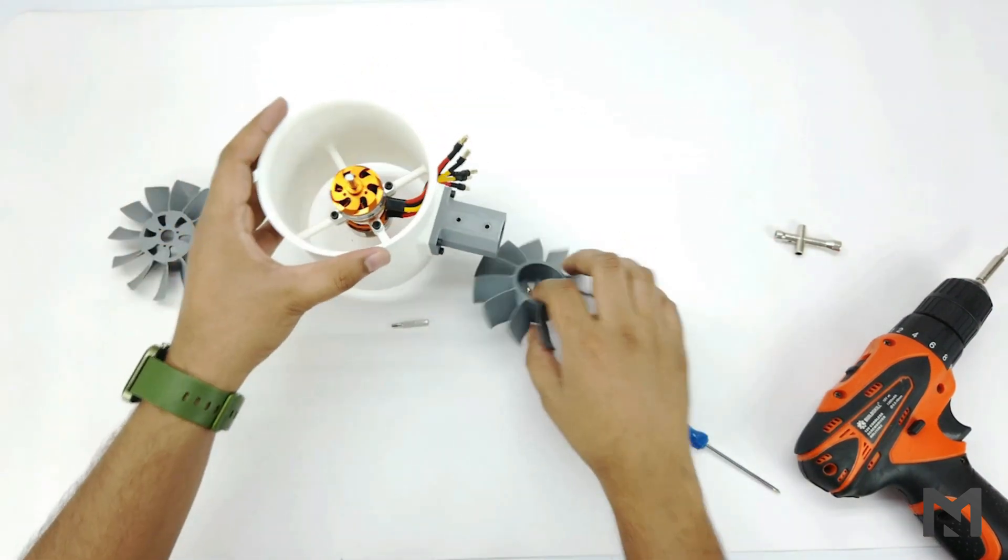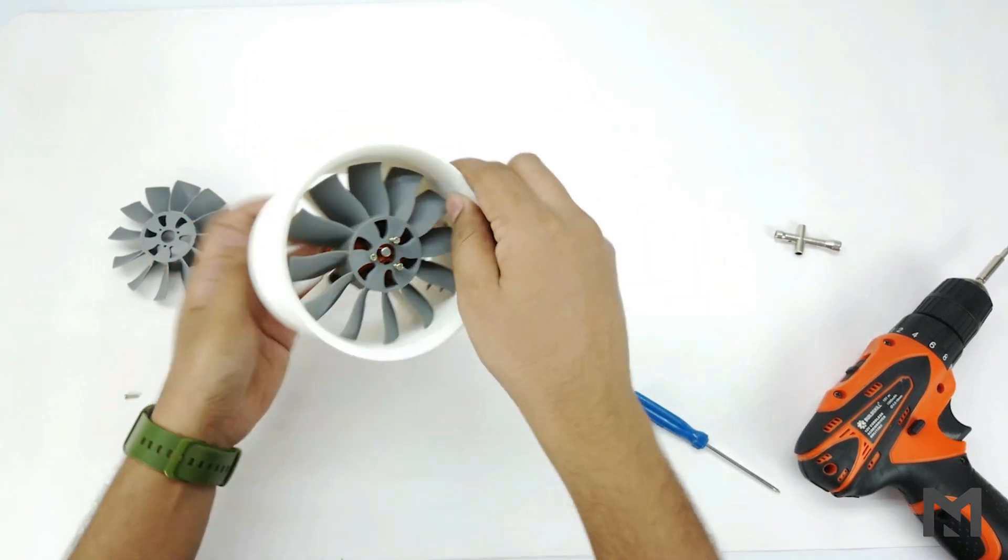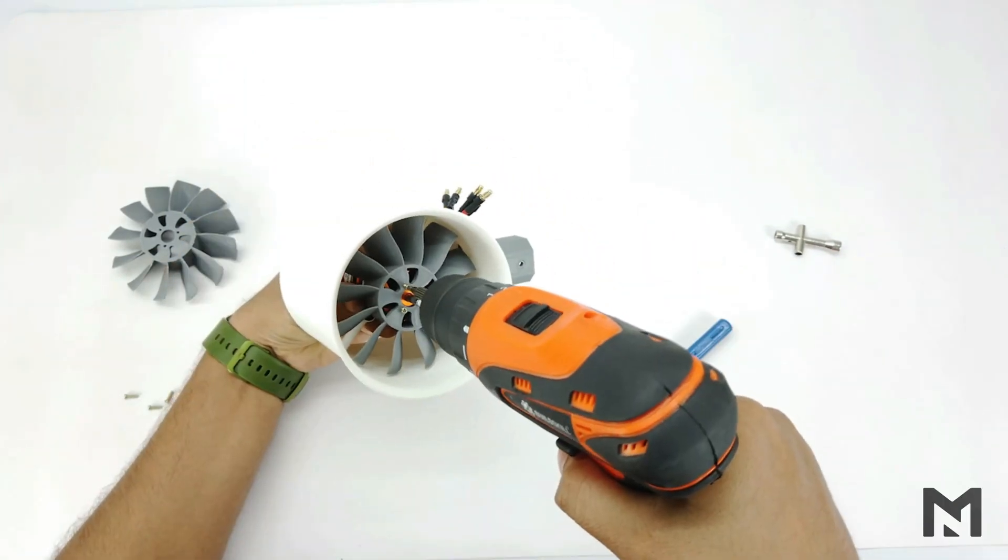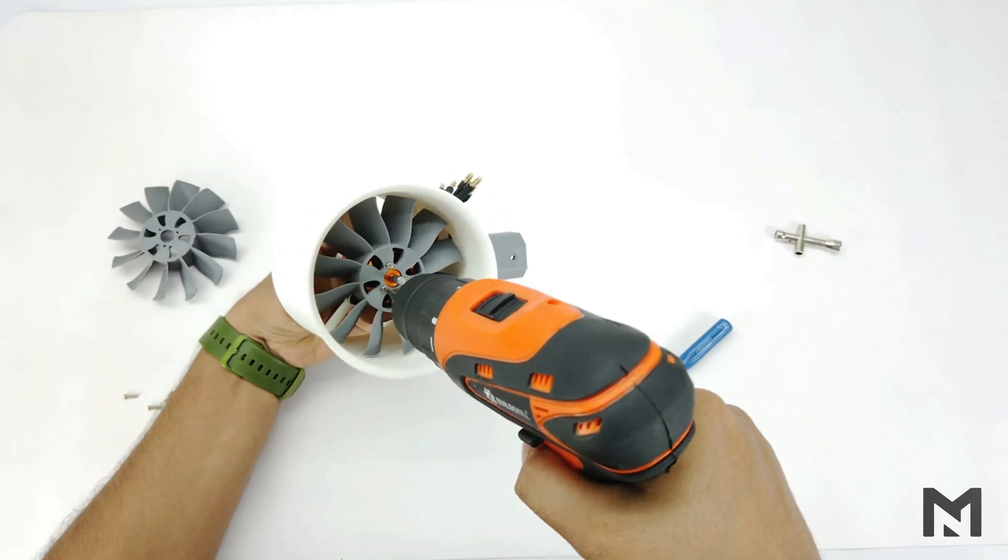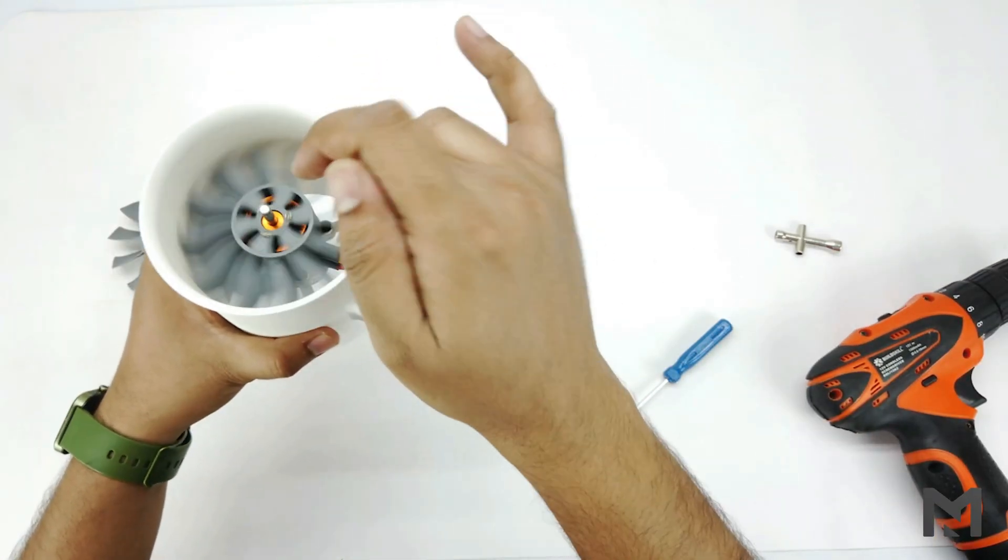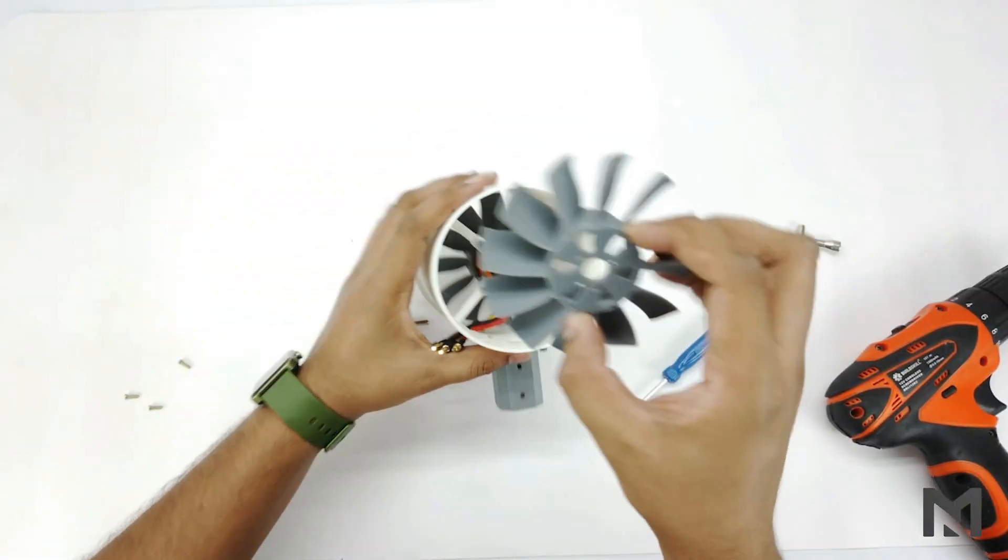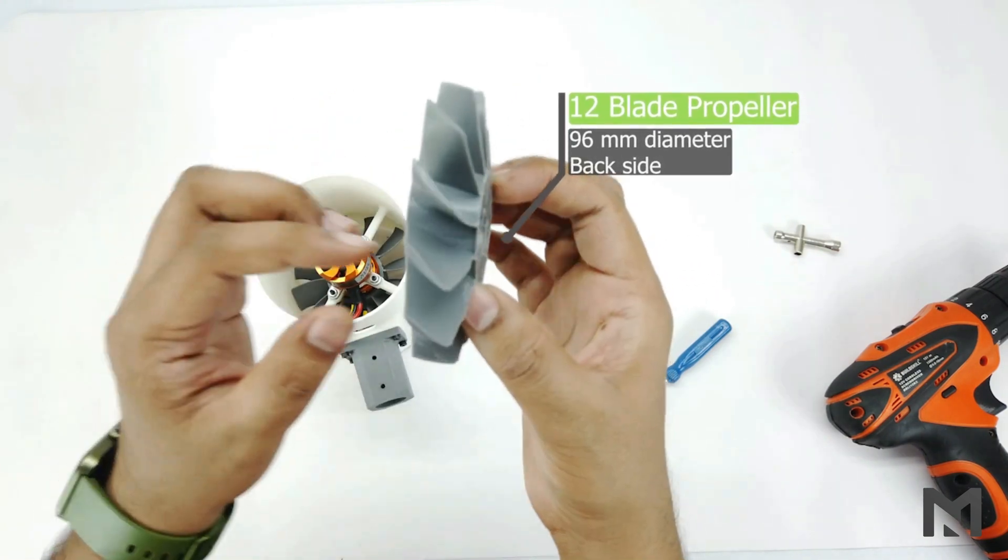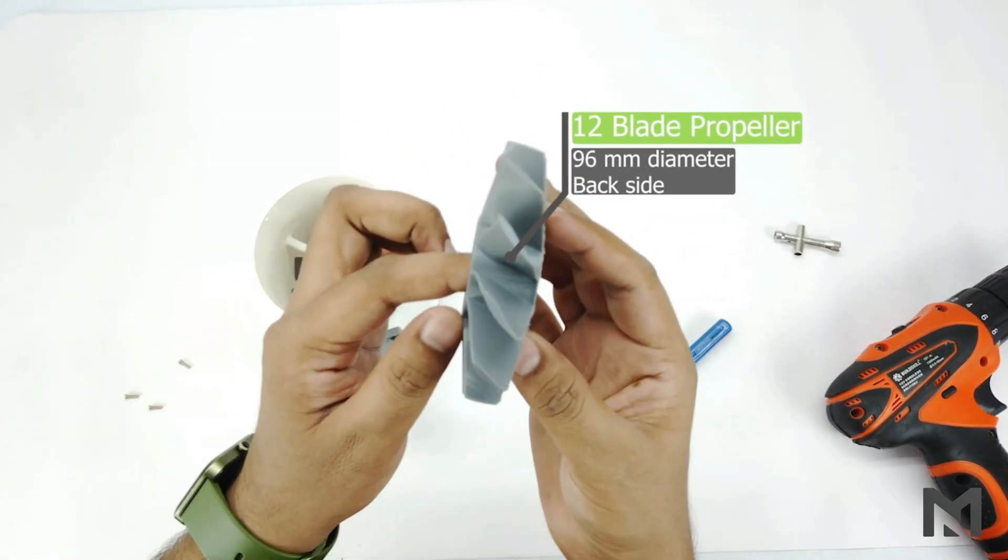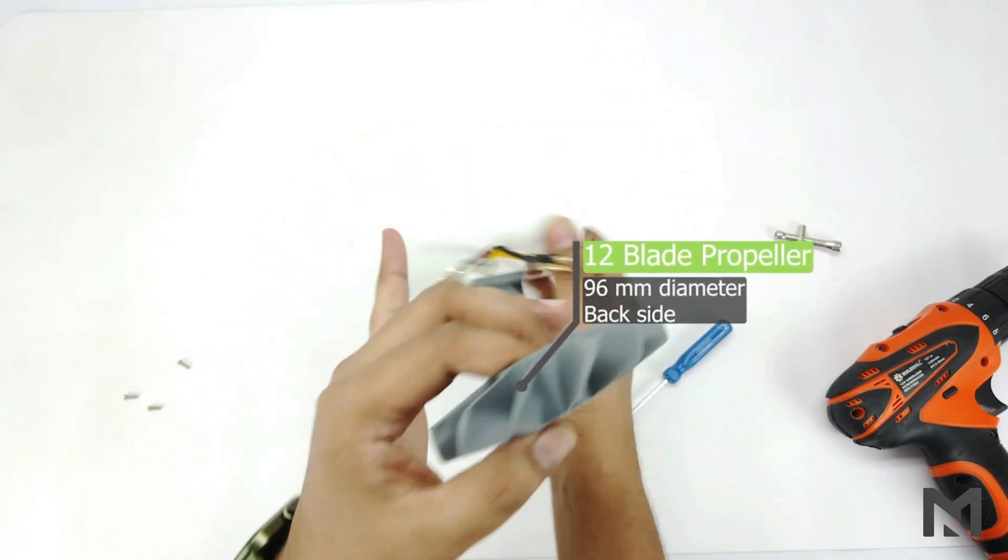Now I will attach both the propellers. This propeller will be mounted at the back in both cases because it is designed in such a way. We will only replace the front propeller.